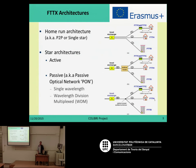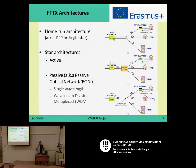First, let's have an overview of the different architectures. On one hand we can have what is called a home run architecture, also known as single star or point-to-point network. In this case, what you are providing is a fibre connection between your central office and each of the users that you want to provide service.